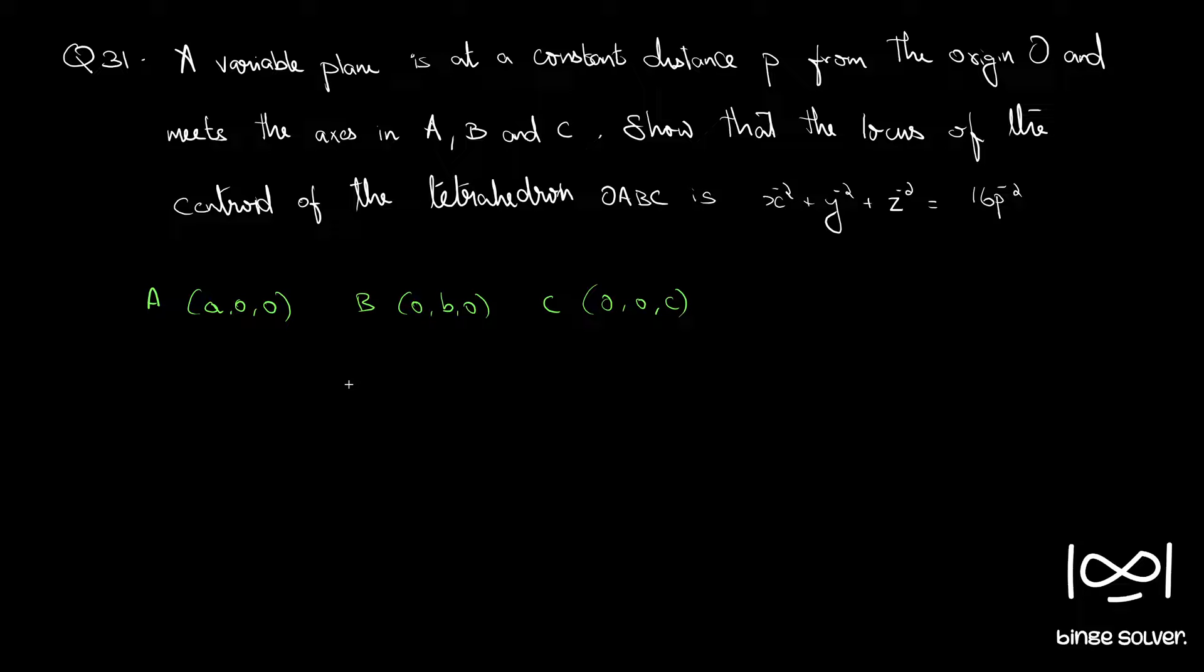Now a plane that passed through these three points is given by the equation x by a plus y by b plus z by c equal to 1. So if you are not familiar with this formula you can simply derive this formula from the standard normal form of a plane which is lx plus my plus nz equal to p and from here you can apply these three points to this equation and derive this formula. So I have derived this formula in the previous questions so you can refer those questions.